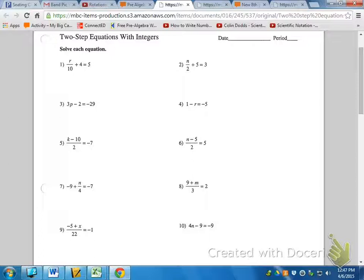Because it says two-step equations, you can count on that you are doing two operations to get the variable by itself.